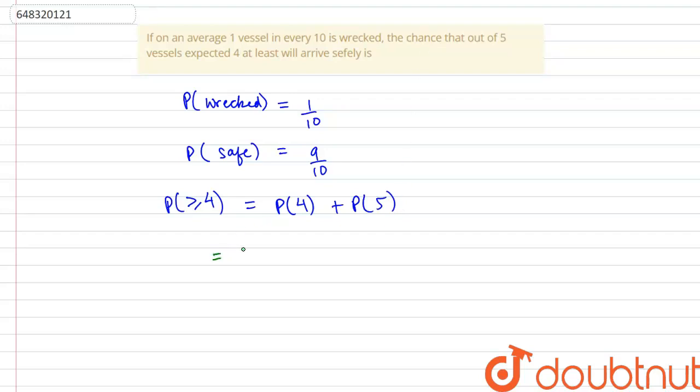This would be equal to 5C4, safe vessels to the power of 4 and the one wrecked vessel to the power of 1. 5C4 because out of the 5 vessels 4 have to be safe and these are the ways in which the 4 vessels can be safe.